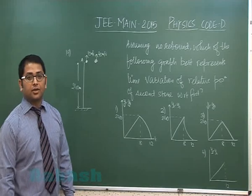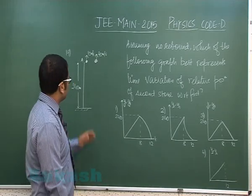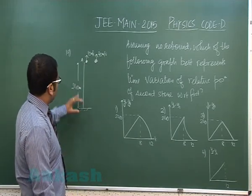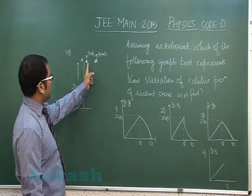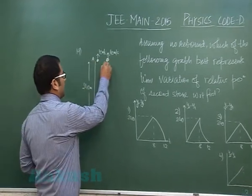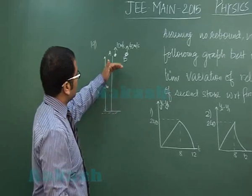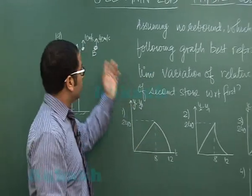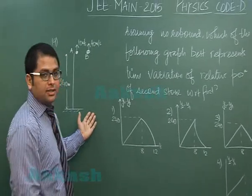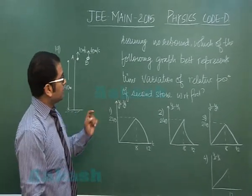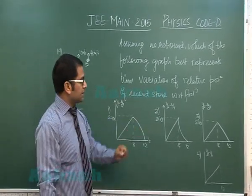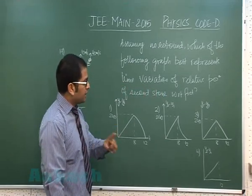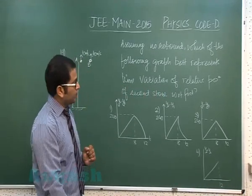Question 19 is from kinematics. It shows a cliff of height 240 meters with two balls A and B thrown upward with given speeds. Assuming no rebound, which of the following graphs best represents time variation of relative position of second ball with respect to first?